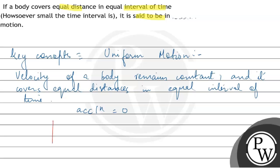This is a graph of distance versus time. If I talk about velocity, it will be displacement versus time.